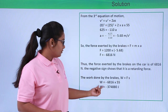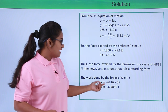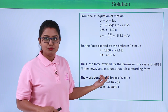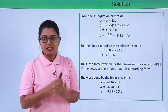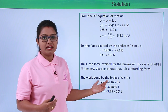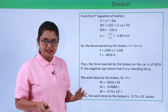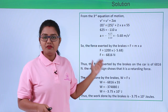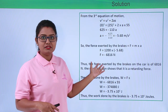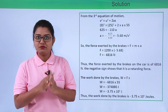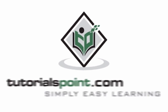We have force = −6816 newtons and displacement = 55 meters. Multiplying them: W = −6816 × 55 = −374,880 joules, which in standard form is −3.75 × 10⁵ joules. So the work done by the brakes was found to be −3.75 × 10⁵ joules. This brings us to the end of the solution. Thanks for watching TutorialsPoint.com — Simply Easy Learning.